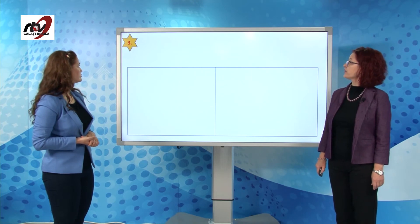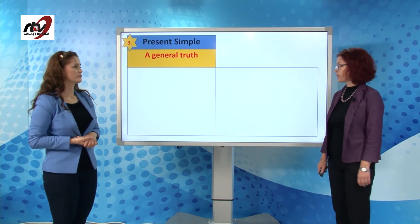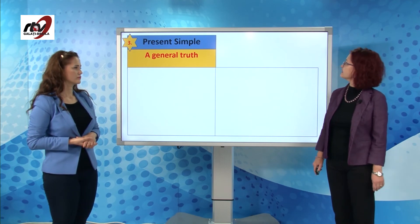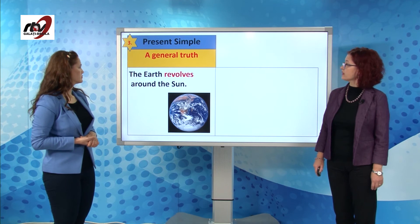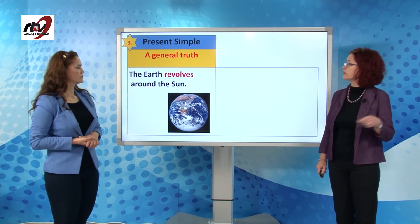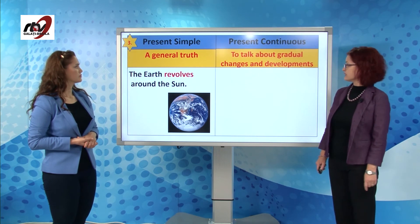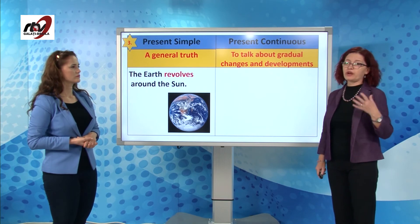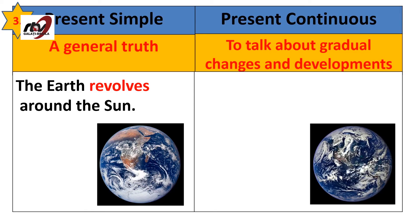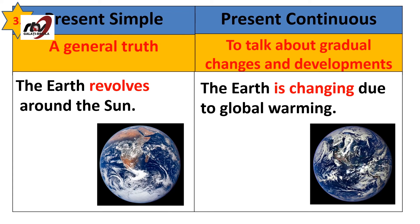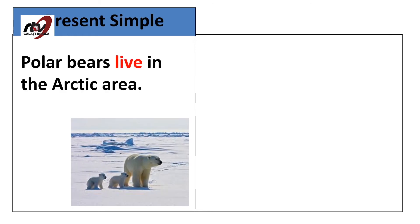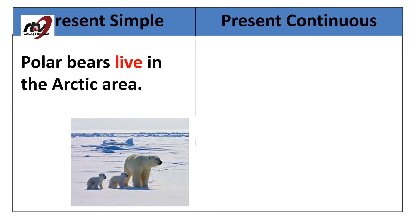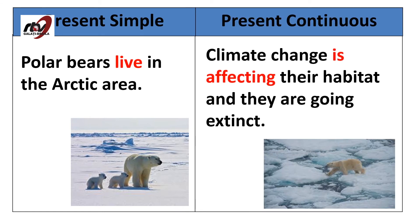The third use: we use present simple for a general truth or something scientifically proven — the earth revolves around the sun. Present continuous is used to talk about changes that happen gradually or changes in development — the earth is changing due to global warming. Polar bears live in the Arctic area — climate change is affecting their habitat and they are going extinct.